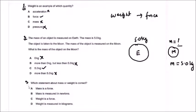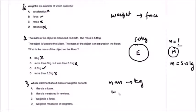Question number three: Which statement about mass or weight is correct? Option A — mass is a force. Option B — mass is measured in newtons. Option C — weight is a force. Option D — weight is measured in kilograms. Recall the definitions: mass describes how much matter an object is composed of; weight describes the gravitational force on an object. Mass is measured in kilograms and weight is measured in newtons.